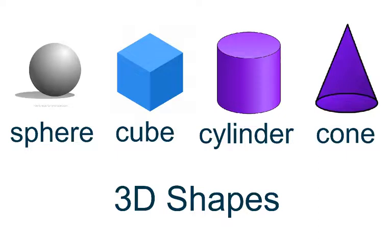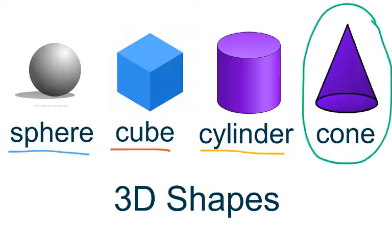We are on the last of our four 3D shapes that we've learned about in this chapter. The first shape we learned about was our sphere. Then we learned about a cube, a cylinder, and lastly today we will learn about the cone.